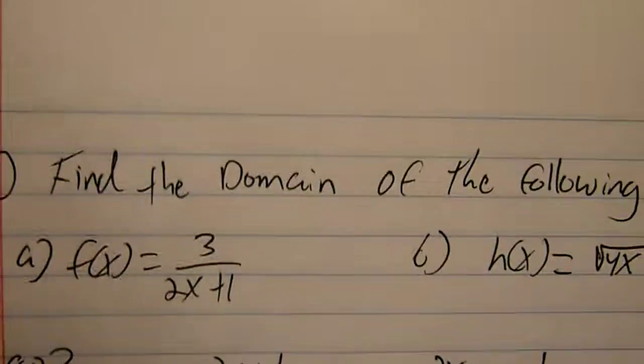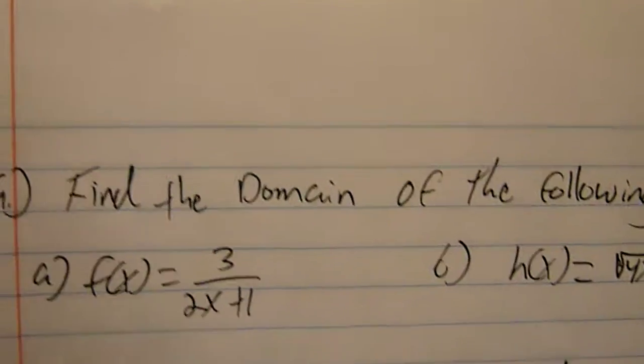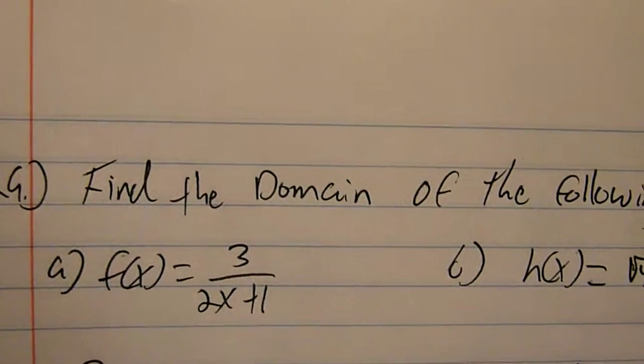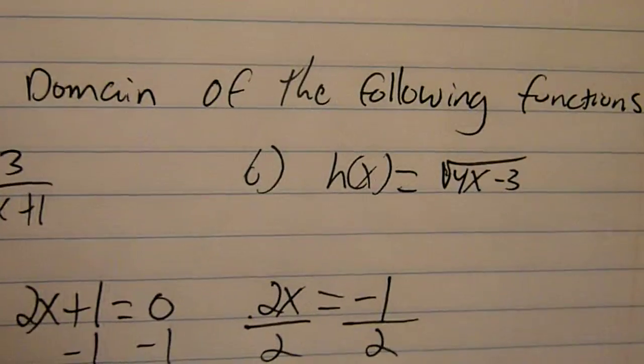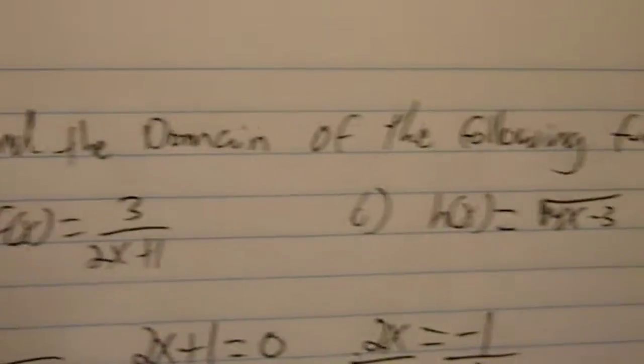In order to find a domain, for part a, you have to find whatever sets the denominator to 0. And for part b, you have to find whatever sets the radical to 0. So let's start with part a.